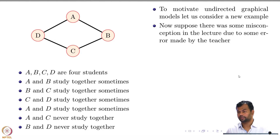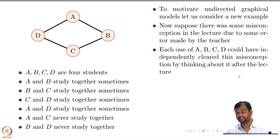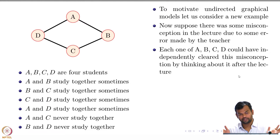Let us consider this situation: all of these students are attending some lectures and there was a misconception in class because of some mistake the instructor made. There is some concept which everyone in the class has not understood properly. Now, once they go back — being good students — they read the material, lecture slides, and other things, and think about the subject. In the course of time they may or may not clear this misconception, because the instructor made some mistake, and that misconception is a random variable — it could or could not have been cleared.